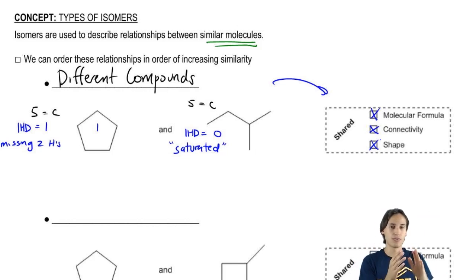So basically if your Molecular Formula is off, none of these other things can be shared because you already messed up the first step which is that they don't even have the same atoms. Does that make sense? So these would be different compounds.